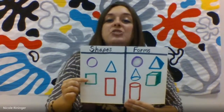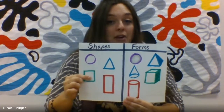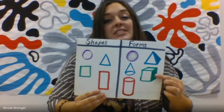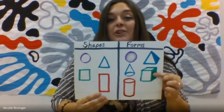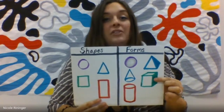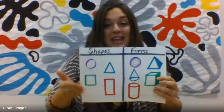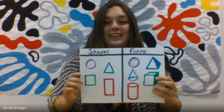I have a shape of a square right here, but if I give it sides, it becomes a form called a cube. Can you say cube? Very good.